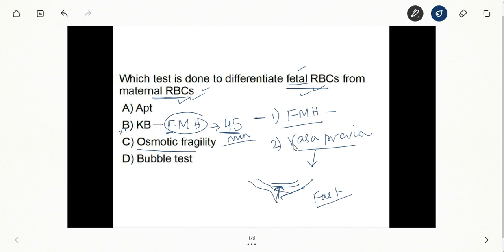Then there's this osmotic fragility testing. This is used in this principle of Nesterov test used in thalassemia. Bubble test is a test done for lung maturity on amniotic fluid. So your answer is apt.